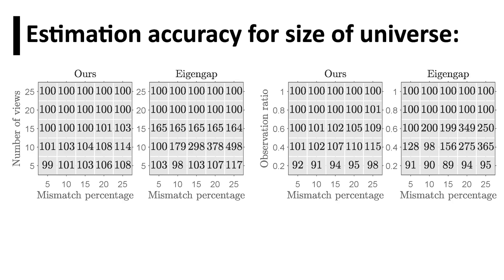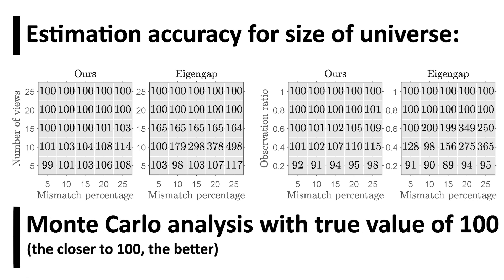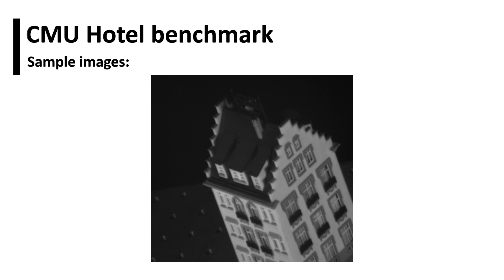We compare the estimation accuracy of CLEAR with the standard eigen-gap method for estimating the size of the universe. Our Monte Carlo analysis with different percentage of association error, number of views, and observation ratios show the higher accuracy of CLEAR estimates. We benchmarked the CLEAR algorithm on the CMU Hotel dataset.